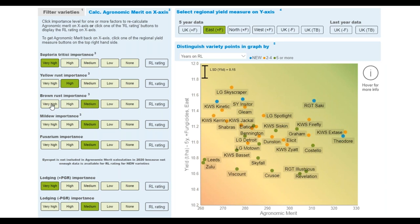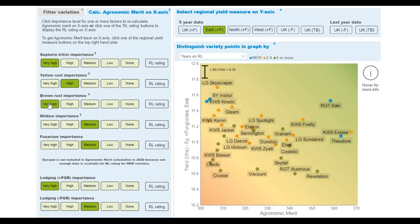Rather than just looking at yield, you can look at the overall genetic strength. In this case, for example, we're looking at the east. We've set up a default weighting, but you can change that. If, for example, in the east, you think that brown rust is very important, you click very high. What has changed now is that, whereas initially it was medium, and therefore the brown rust rating was multiplied by four, you've now selected very high, and that means the brown rust rating is multiplied by ten.